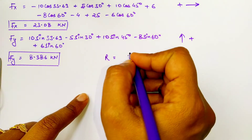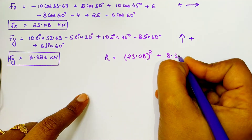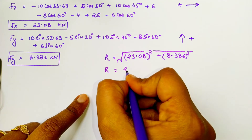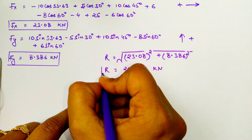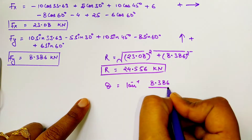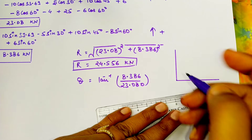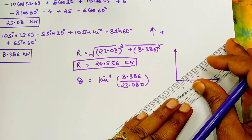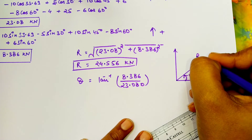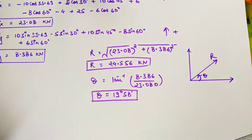Now finding the resultant: R = √(ΣFx² + ΣFy²). Put this into the formula and calculate the magnitude of the resultant. For direction: θ = tan⁻¹(ΣFy / ΣFx). Put the values in the calculator and press the degree button so the result is in degrees. The diagram here shows the resultant with its direction — theta and R together give you the magnitude and direction.